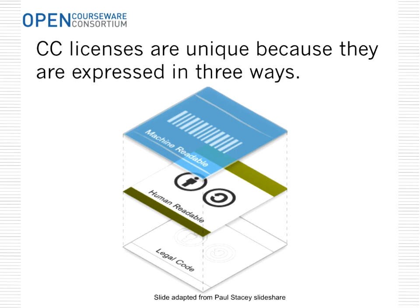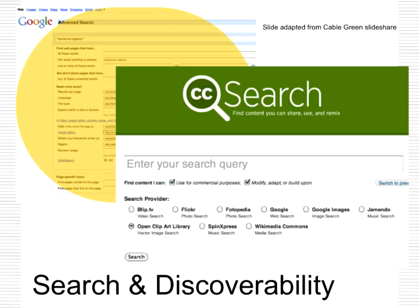Creative Commons licenses are unique because they have a human-readable piece, a machine-readable portion which allows this to be read over the internet through your browser — providing searchability — and finally legal code. Within the United States we have a set of legal code that works with Creative Commons licenses, and it varies from country to country because copyright code differs in each country.